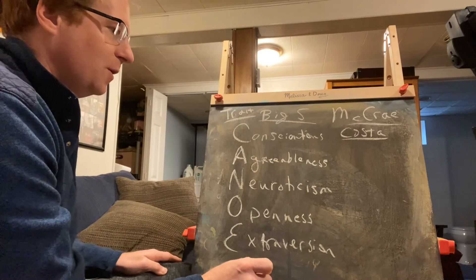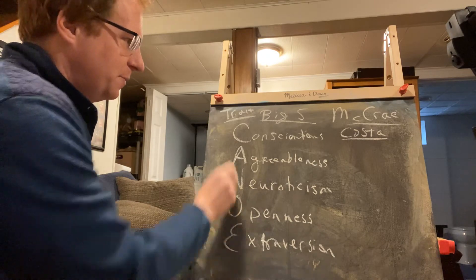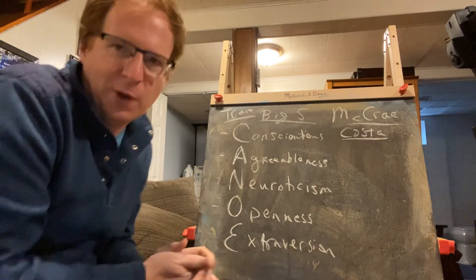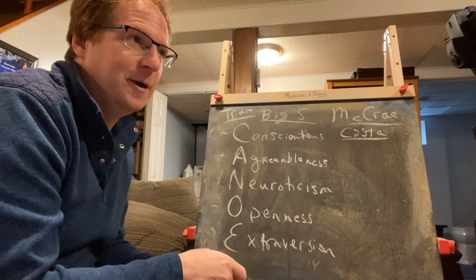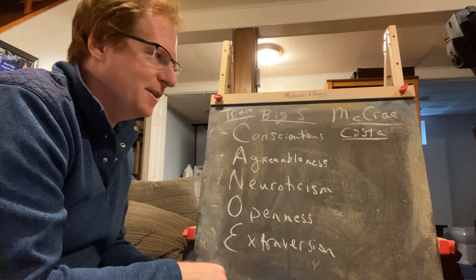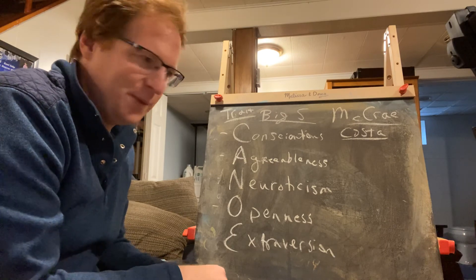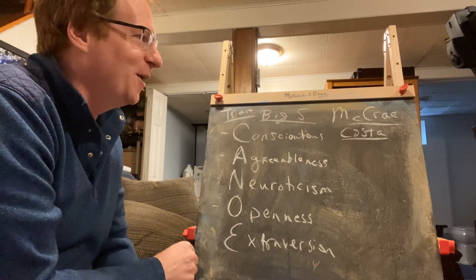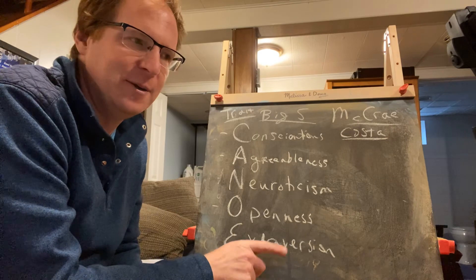We have conscientiousness, agreeableness, neuroticism, openness, and extraversion. Probably two or three I may need to explain the most. It'll be kind of cool. You'll get—it's sort of like a real-life horoscope with actual science behind it. Anyways, we'll talk more about that on Monday.